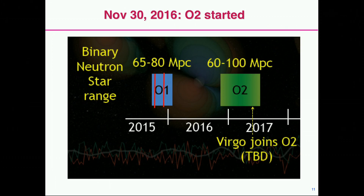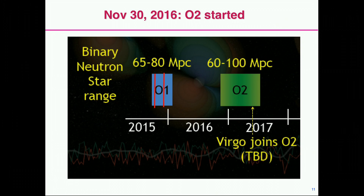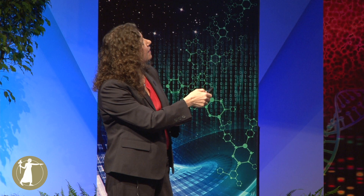We were only going to take data for a few months, and we did. Then we went down to keep improving the sensitivity of our detector because we have the potential to be three or four times better than we were then. We measured our sensitivity as the distance to mergers of neutron stars. So we went down, and then in November 2016, we started taking data again. Virgo was going to join us sometime later. January 4th, we measured the third coalescence of black holes.